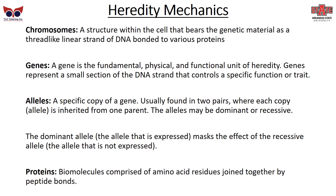Let's talk about hereditary mechanics — how exactly does this work? We'll start with chromosomes. A chromosome is a structure within the cell that bears the genetic material as a thread-like, linear strand of DNA bonded to various proteins. A gene is the fundamental physical and functional unit of heredity. Genes represent a very small section of the DNA strand that controls a specific function or trait, such as red hair or left-handedness.